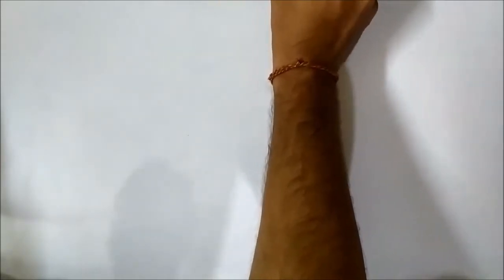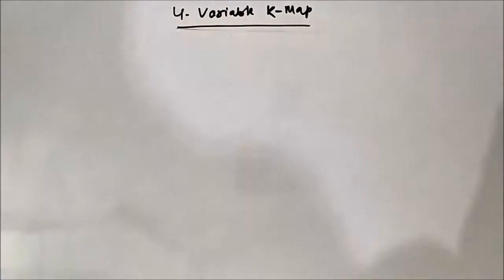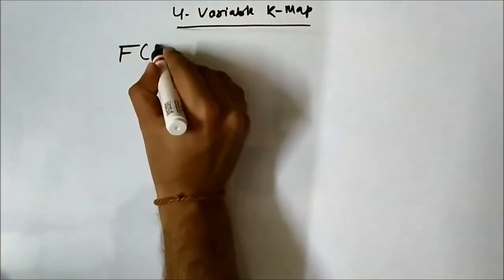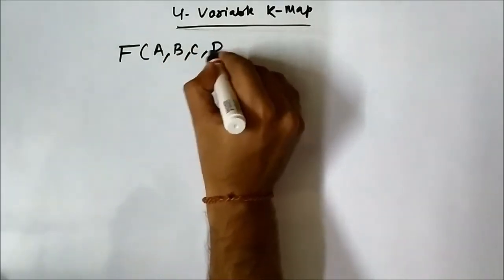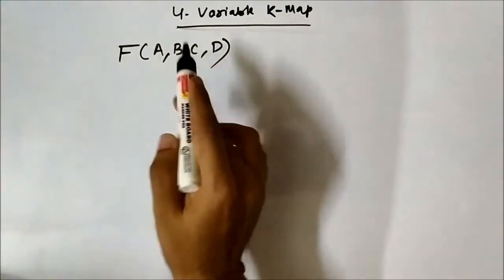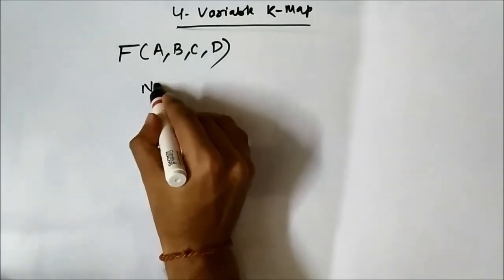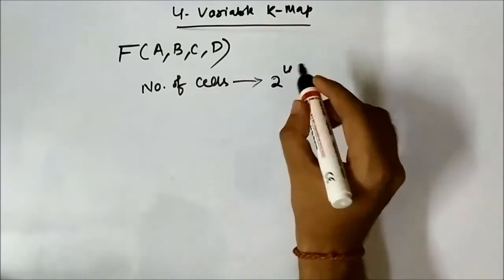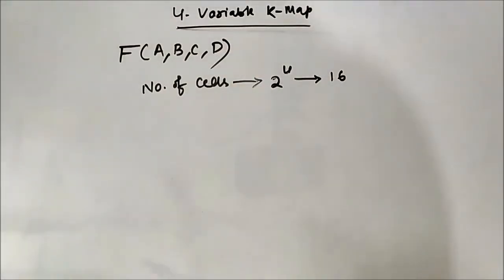We have discussed about 2 and 3 variable kmaps, now we will discuss about the 4 variable kmap. Here, the 4 variable kmap consists of a Boolean expression consisting of 4 variables — let us say A, B, C, and D. As per the rule of kmaps, the number of cells that can be accommodated is 2 to the power 4, which is equal to 16, because using these 4 variables, complemented or uncomplemented, we can form 16 Boolean terms.